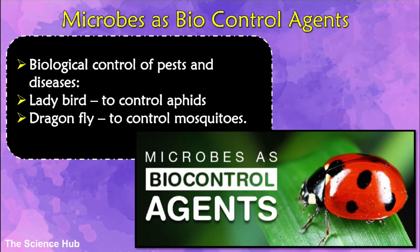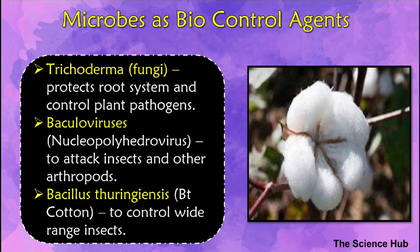Microbes as biocontrol agents — biocontrol means use of biological methods for controlling plant disease and pests. Chemical pesticides and insecticides are harmful to human beings and animals. Biological control of pests and diseases is a method of controlling pests using natural predation rather than chemicals. The organic farmer creates a system where pests are not eradicated but kept at manageable levels through complex checks and balances within the ecosystem. For example, ladybirds and dragonflies are used to get rid of aphids and mosquitoes respectively. To control butterfly caterpillars, the bacterium Bacillus thuringiensis is used. A fungus called Trichoderma has also been developed for biological control for use in the treatment of plant diseases.